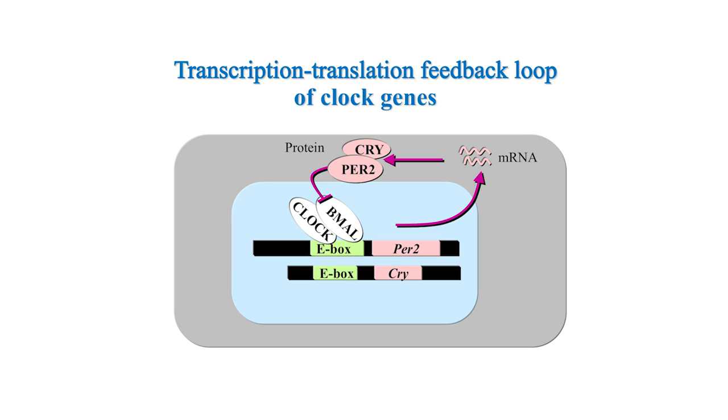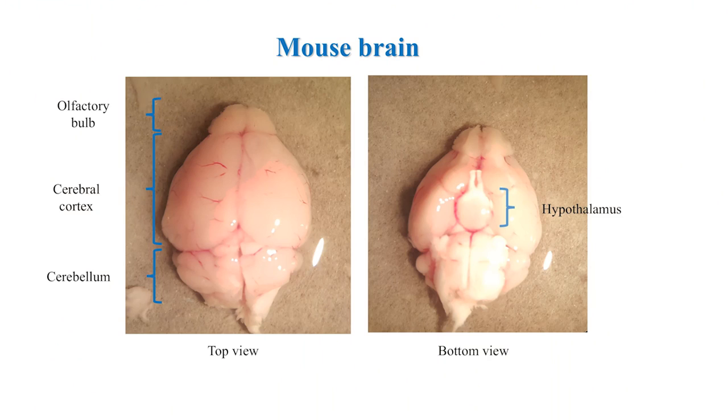To prepare the sample for the experiment, we first humanely euthanize the mouse. We extract the whole brain carefully to avoid damaging the hypothalamus. Brains are stored in ice cold saline. Here you can see the extracted mouse brain.